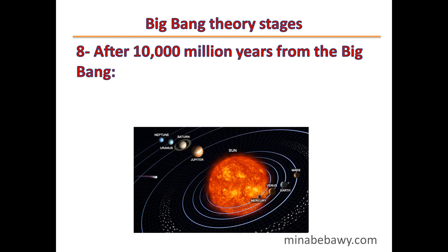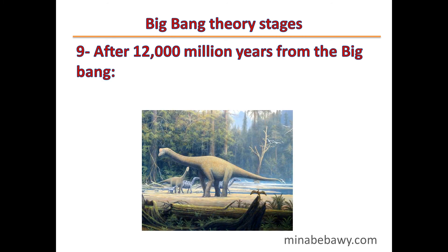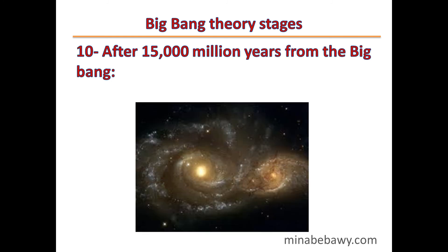Stage 8 — After 10,000 million years from the Big Bang, the sun was born, then the Earth and planets were created. Stage 9 — After 12,000 million years from the Big Bang, the earliest life forms began to appear on Earth. Stage 10 — After 15,000 million years from the Big Bang, the universe is as it is now.